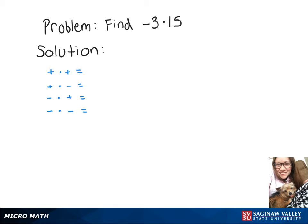We're going to find negative 3 times 15. First, let's look at the rules of multiplying with negative numbers.